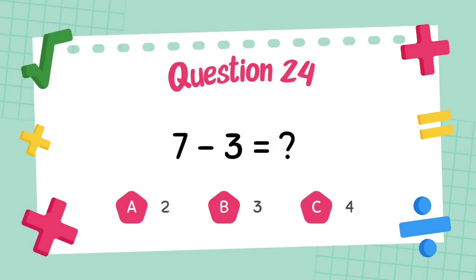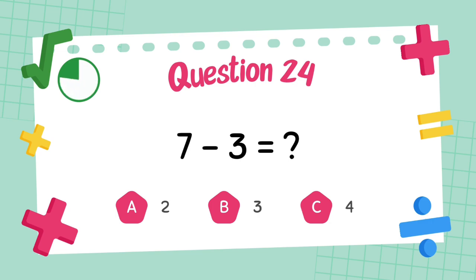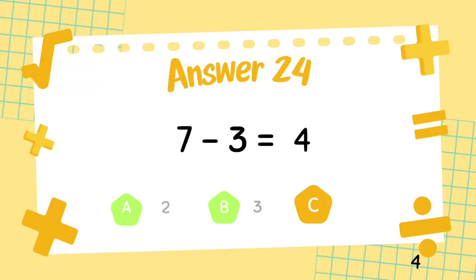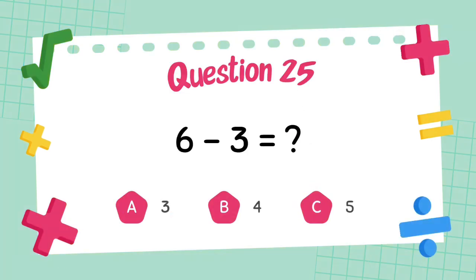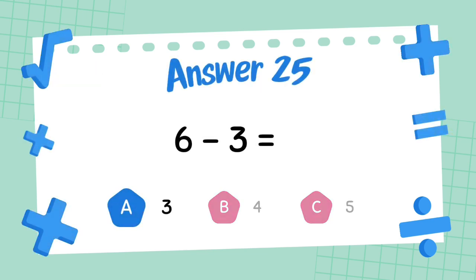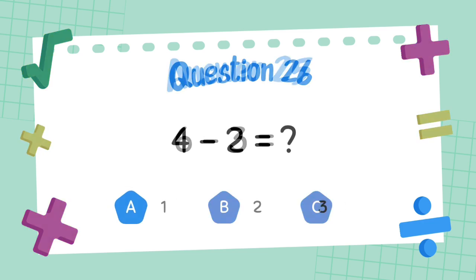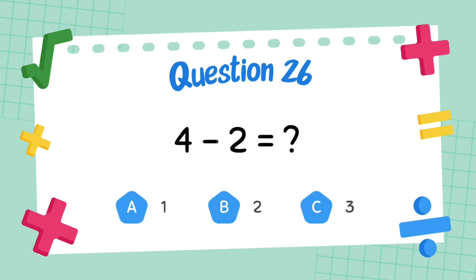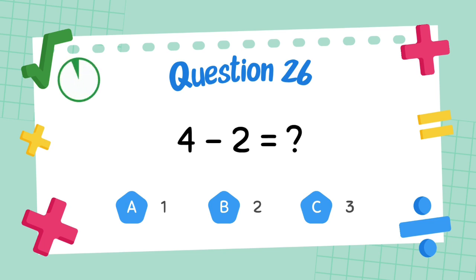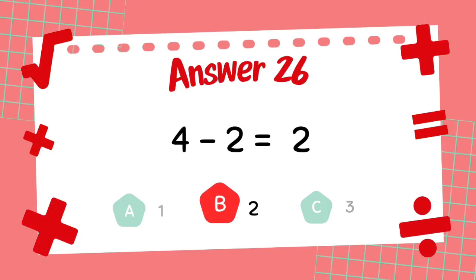What is 7 minus 3? The answer is 4. What is 6 minus 4? The answer is 3. What is 4 minus 2? The answer is 2.